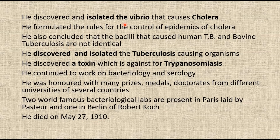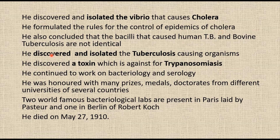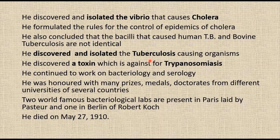Koch also discovered and isolated the Vibrio bacteria, which is the causative agent of cholera disease. He formulated rules for the control of epidemics of cholera. He concluded that the bacillus causing human tuberculosis and bovine tuberculosis are not identical. He discovered and isolated the tuberculosis-causing organism, Mycobacterium tuberculosis, and also discovered a toxin related to trypanosomiasis. He continued to work on bacteriology and serology.